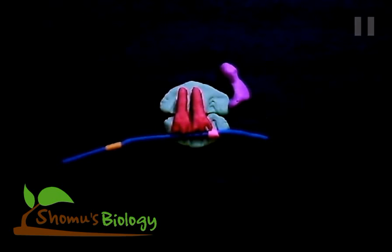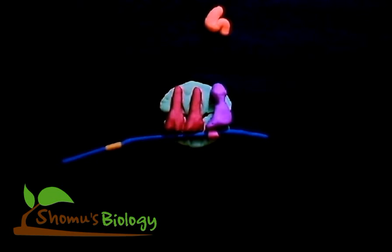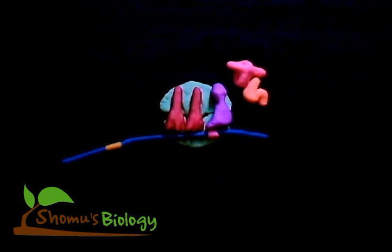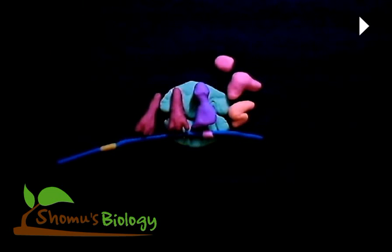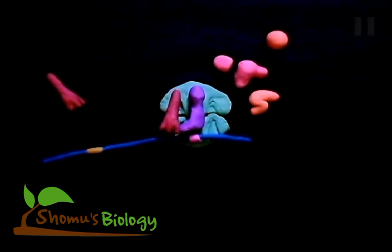Next, the ribosome release factor, RRF, is brought in. This factor is responsible for dissociation of the whole ribosomal complex. RRF binds to the ribosome and then elongation factor G, EF-G, with GTP binds to the 50S subunit region. The GTP is hydrolyzed, causing a final structural shift that releases all the components.